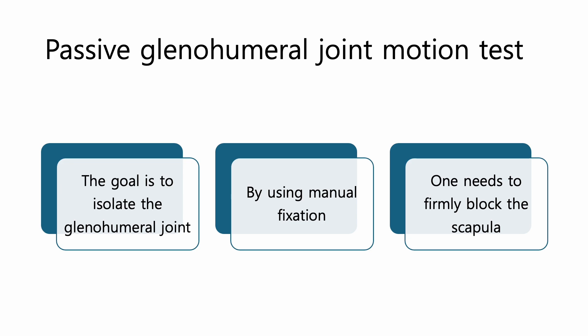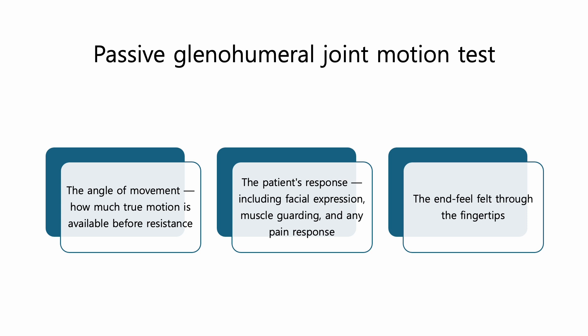The goal of this test is to isolate the glenohumeral joint, and to do that, scapular motion must be excluded by using manual fixation. One needs to firmly block the scapula, especially the inferior angle, using a hand or fingers — this prevents the scapula from rotating and compensating during the test. Using the other hand, controlled passive movement of the shoulder is performed: whether abduction, external rotation, or internal rotation. The test is performed with bare hands, no tools. What is focused on? First, the angle of movement — how much true motion is available before resistance. Second, the patient's response, including facial expression, muscle guarding, and any pain response. Third, the end feel felt through the fingertips.